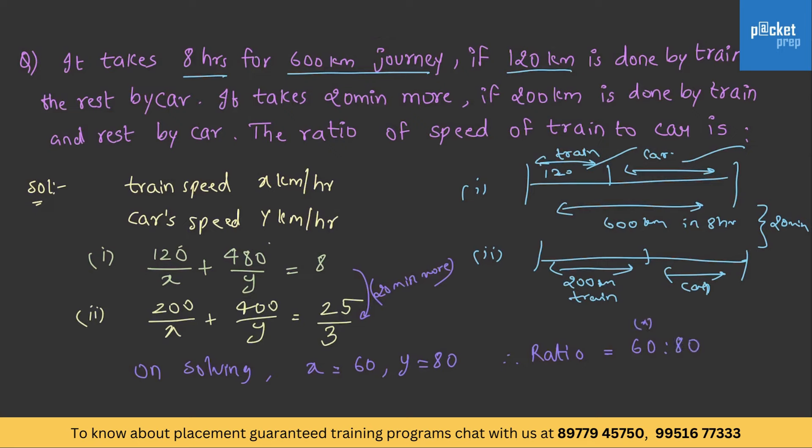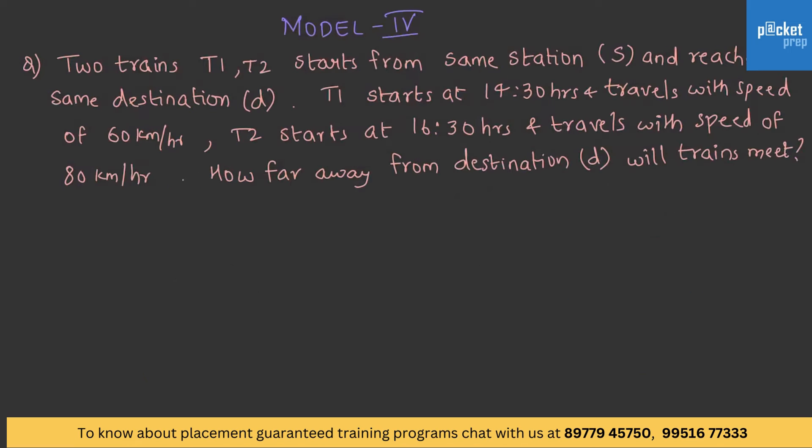That is, x by y which is 3 is to 4. So, next model. In this, it is given that two trains, T1 and T2, starts from the same station.